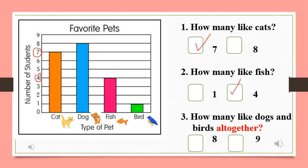Last one, number three. How many like dogs and birds all together? What does the keyword 'all together' tell us? Good job, it tells us that we need to add. Who remembered that? I am quite sure you did. Now what do we need to add? They want to know how many students like dogs and how many students like birds.